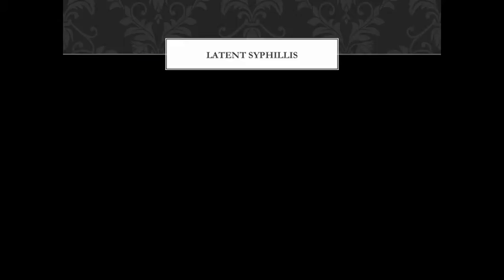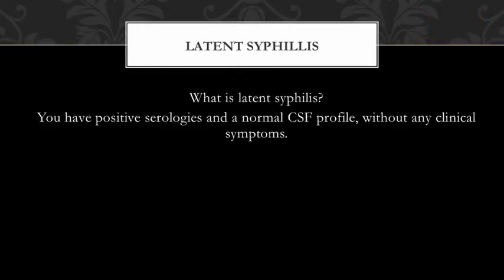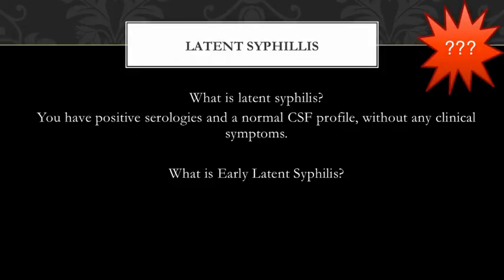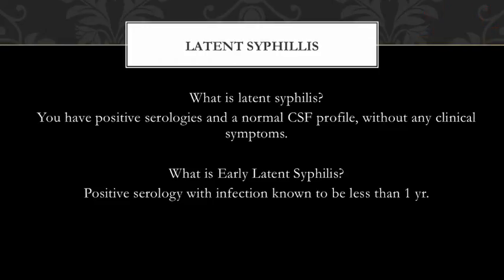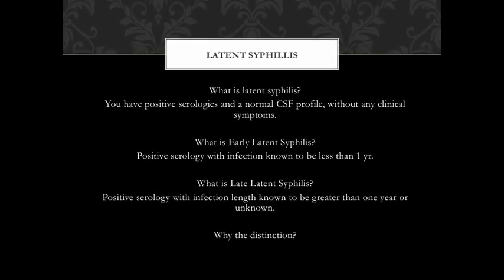Two terms you might hear on a test are early latent and late latent syphilis. Latent syphilis means positive serological tests with a normal CSF examination and a complete lack of clinical manifestations. Early latent syphilis means you have latent syphilis and know you've had the disease for less than one year. Late latent syphilis means you've been infected for longer than a year, or you don't know how long. The distinction matters because the treatments are different.